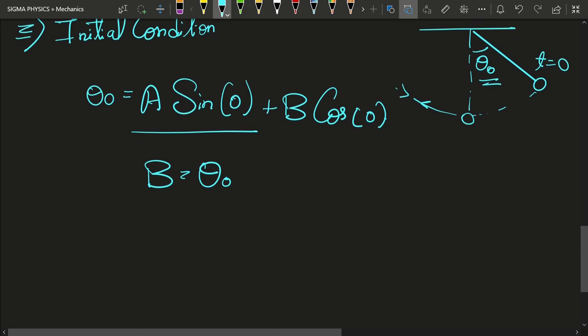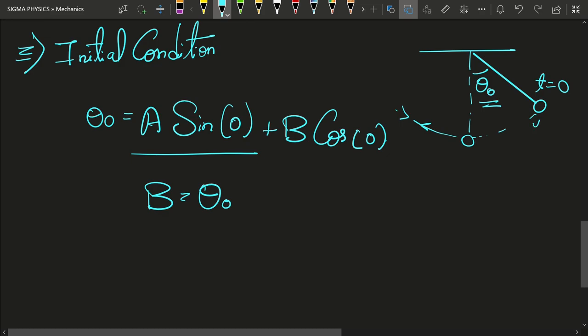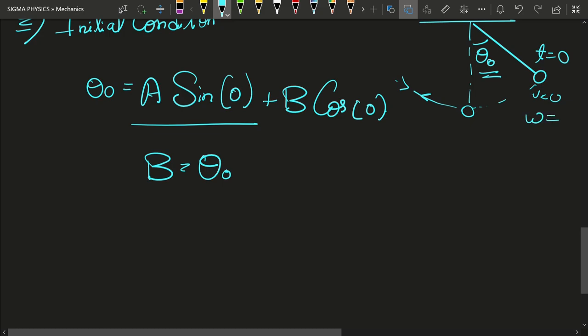Since its velocity is zero here at t = 0—its angular velocity is also zero at t = 0—hence dθ/dt at t = 0...